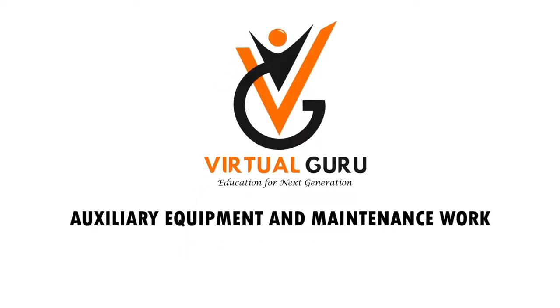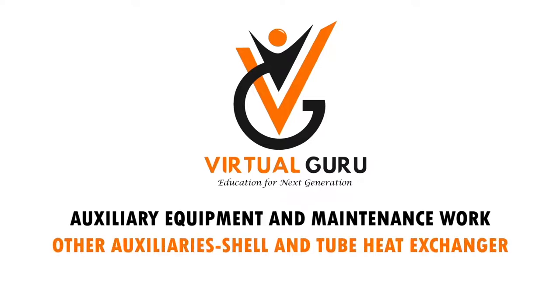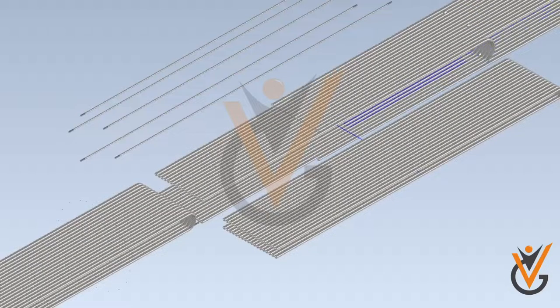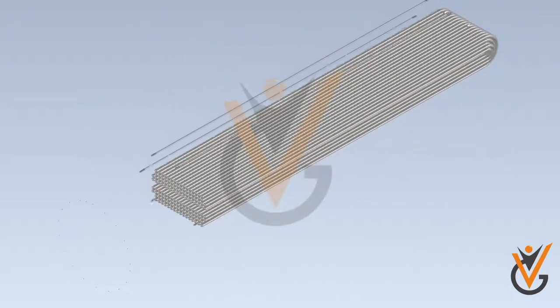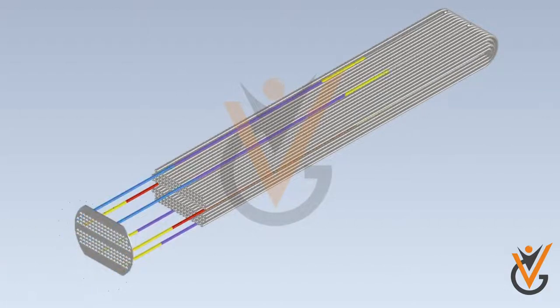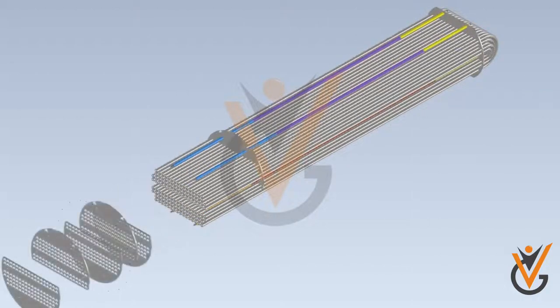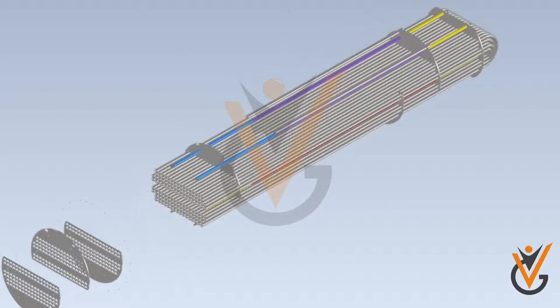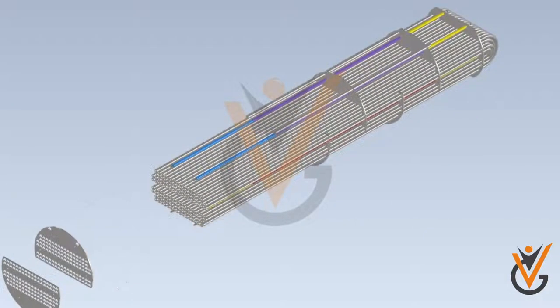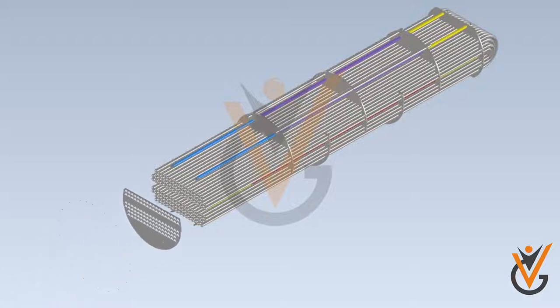Auxiliary equipment and maintenance work: Shell and tube heat exchangers. As the name implies, these types of heat exchangers are made up of large numbers of tubes and a shell covering the bundles of tubes. Shell and tube heat exchangers are useful for pressurized applications. Heat is transferred between the fluid in the tubes and the fluid inside the shell.